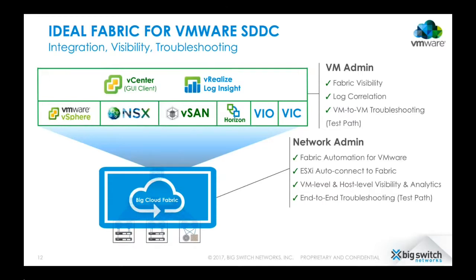Here's a high-level overview of our controller integration with VMware SDDC. Big Cloud Fabric provides network automation and deep visibility for vSphere, NSX, vSAN, Horizon VDI, and other VMware solutions. We also address the common gap between what network admins can see and what VM admins can see. With traditional networking, these teams operate in information silos. We provide automation and visibility for both teams so each can clearly see into the other domain and better identify and troubleshoot issues.